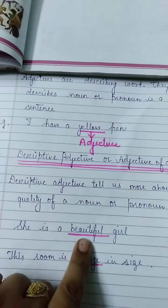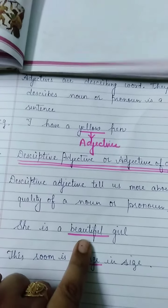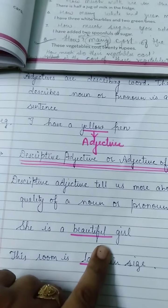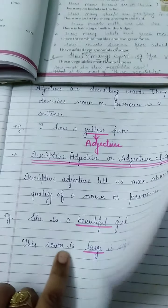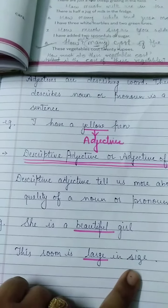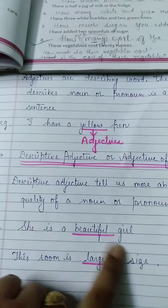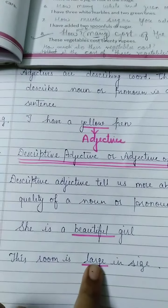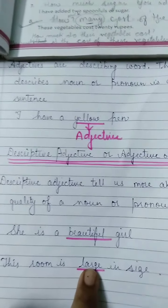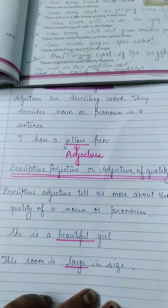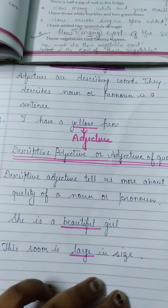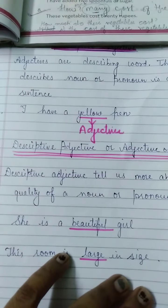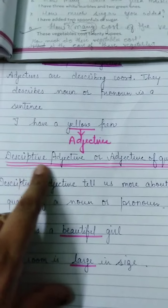Jitne bhi opposite words hote hain, they are also adjectives — like beautiful, ugly, tall, short, new, old. 'This room is large in size' — room ka size kaisa hai? It is large in size, uski size ke baare mein bataya gaya hai. Adjectives are describing words; they tell us something more about noun or pronoun in the sentence.